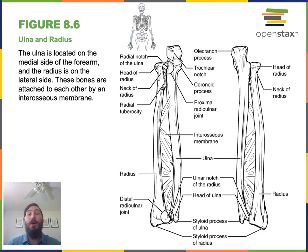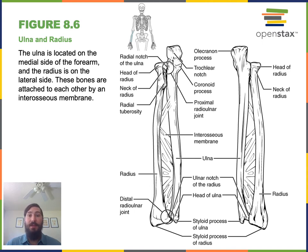There are two long bones found in the antebrachial region. The ulna is the medium-sized long bone in the medial antebrachial region that contacts the distal end of the humerus to form the elbow joint. The lateral long bone in the antebrachial region is known as the radius.